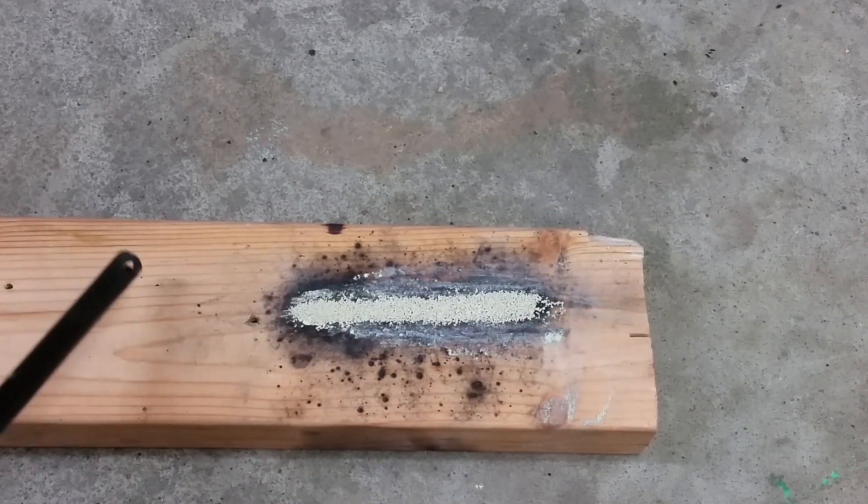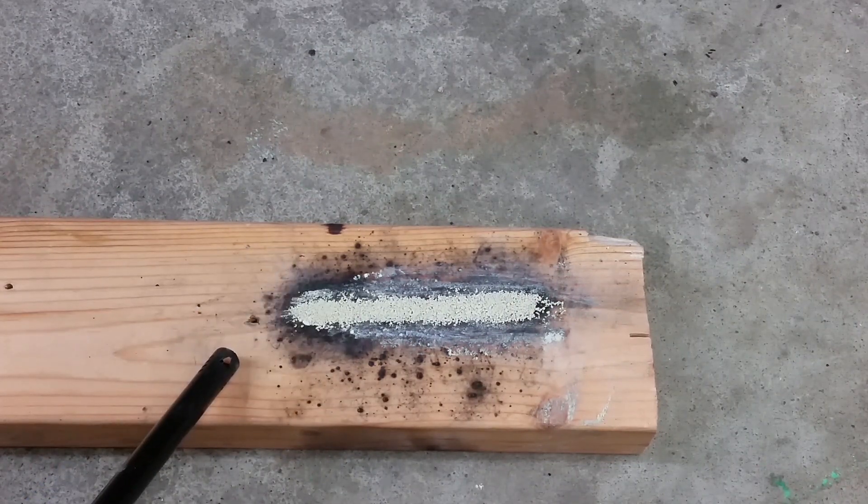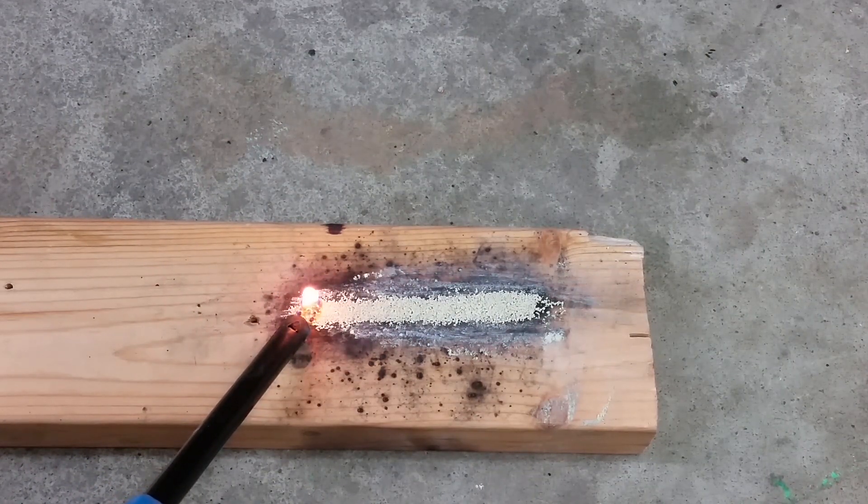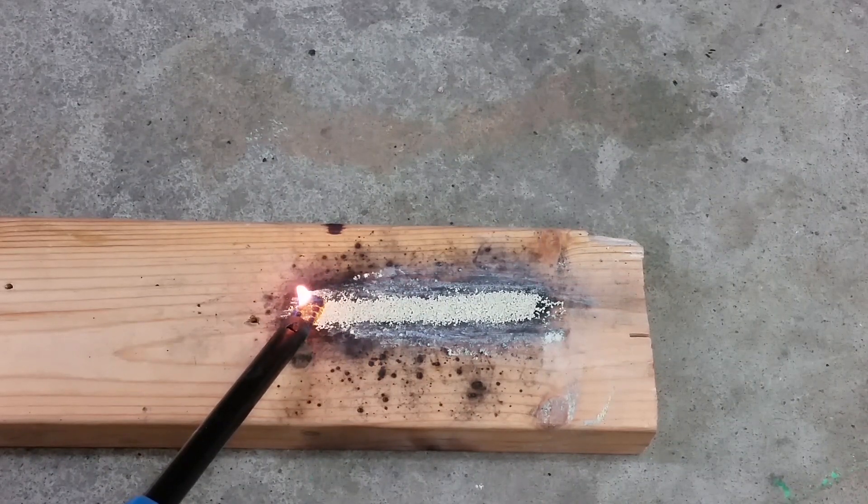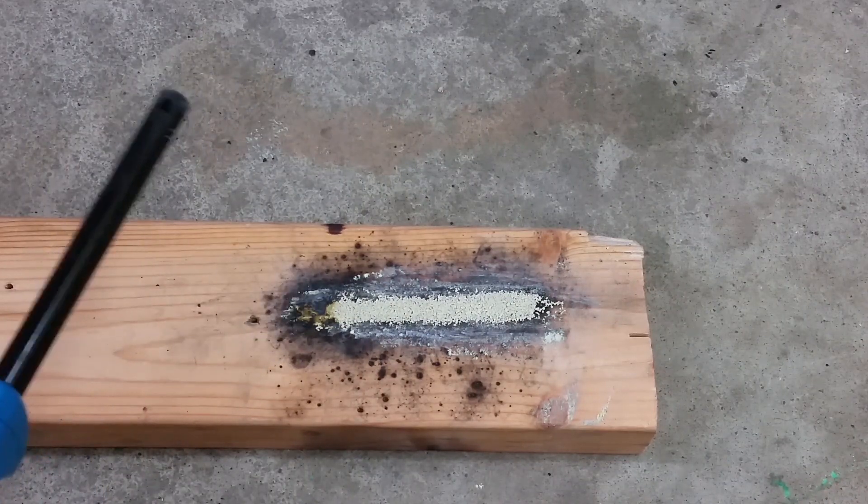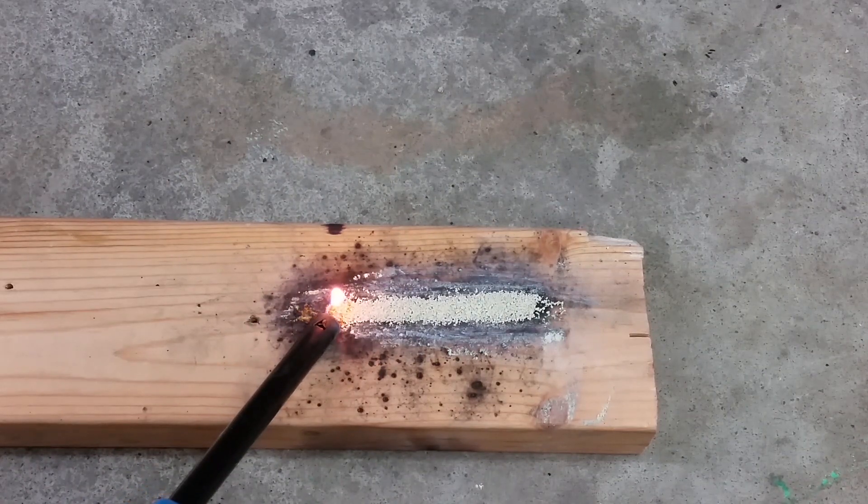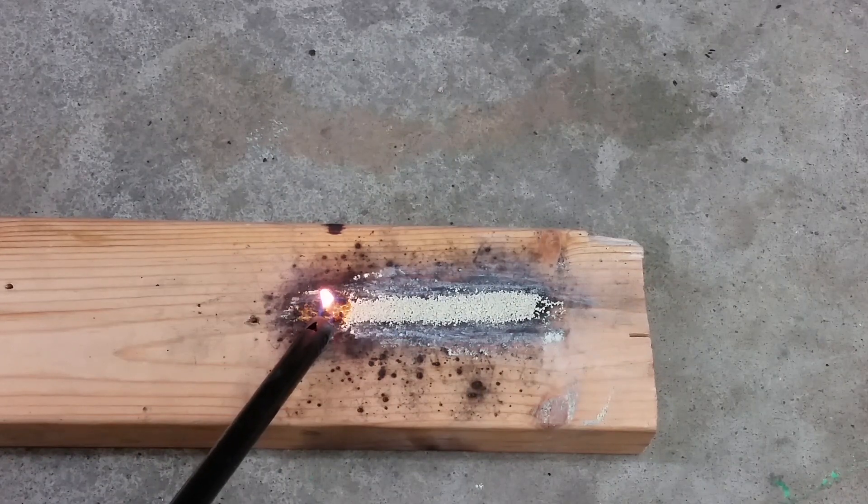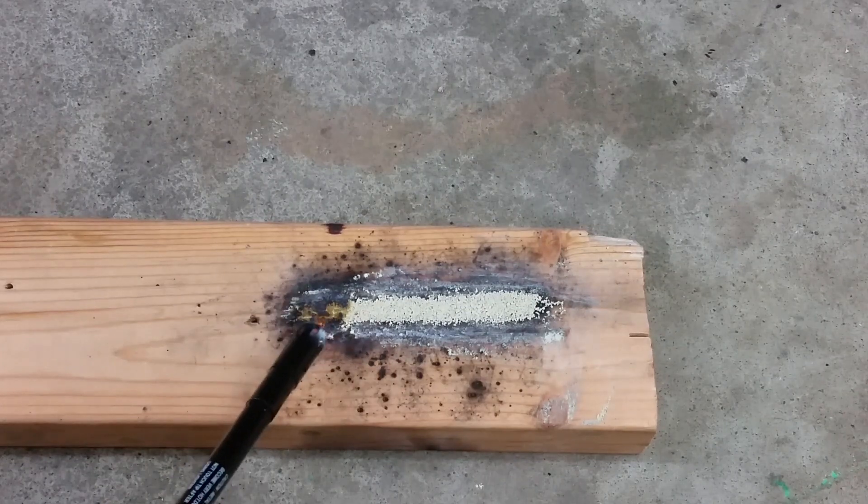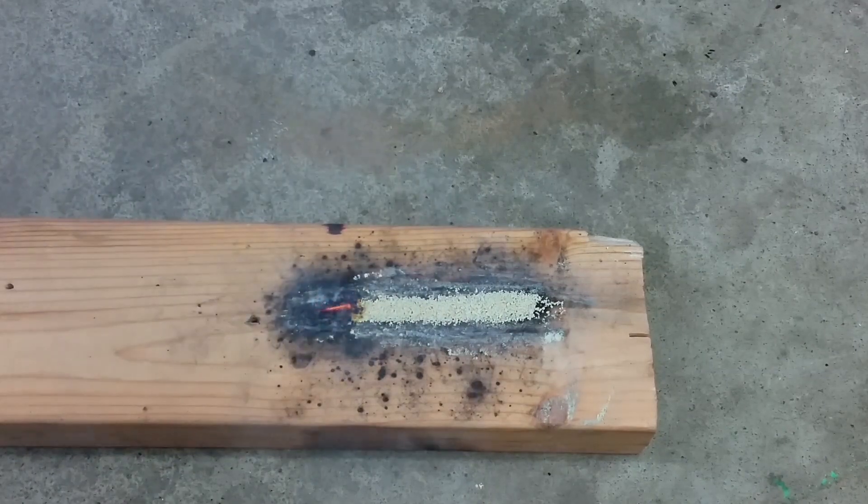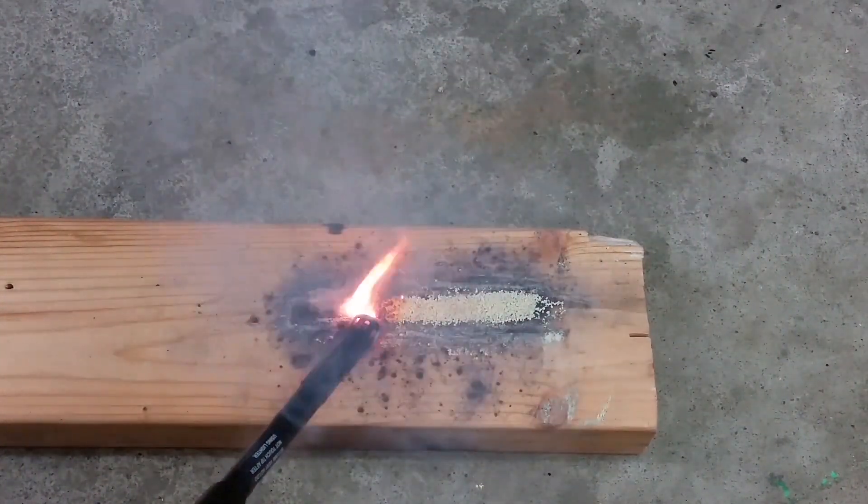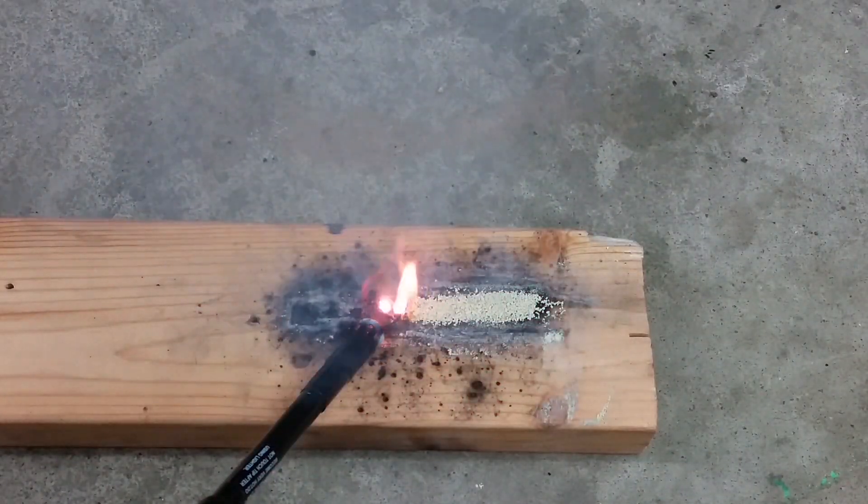As a last minute surprise guest, we have another black powder substitute. This is a 50-50 mixture of the potassium chlorine-based oxidizer and sulfur. Here we go. Come on. Come on. First time. Nope. Ooh, this stuff smells pungent. It smells like a road flare.